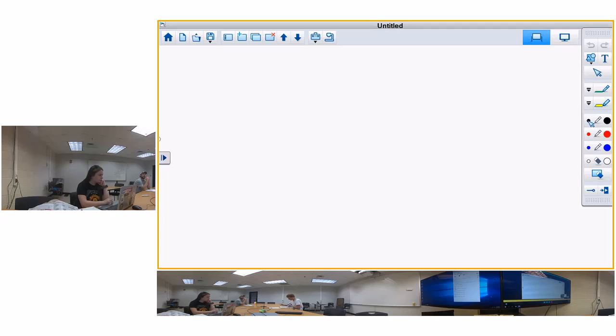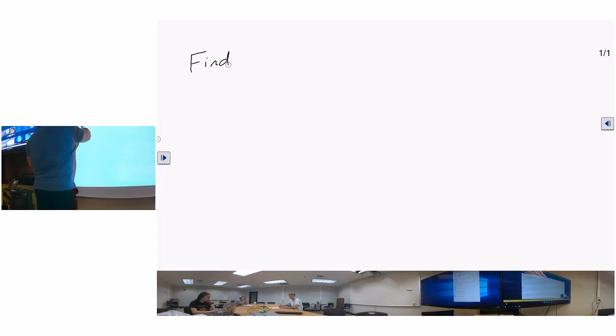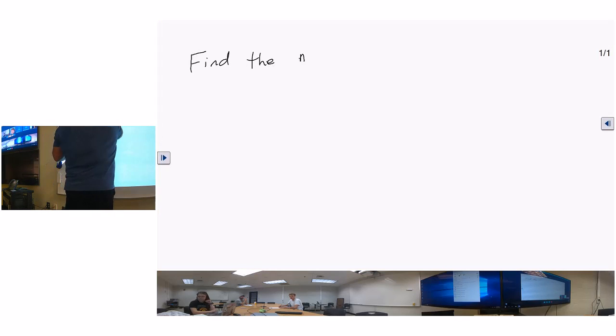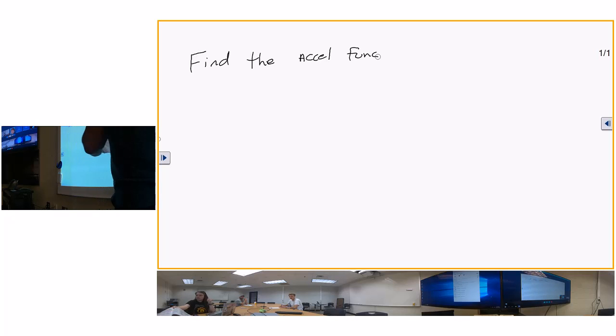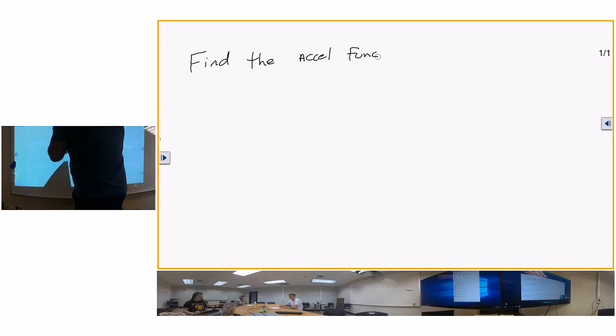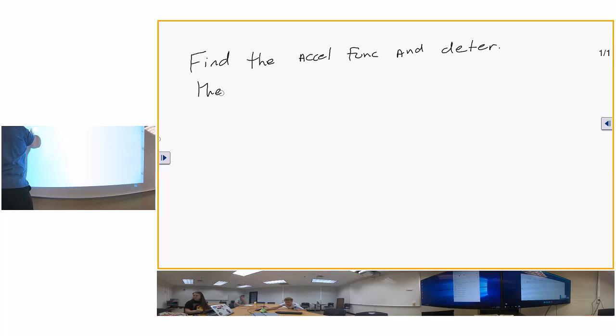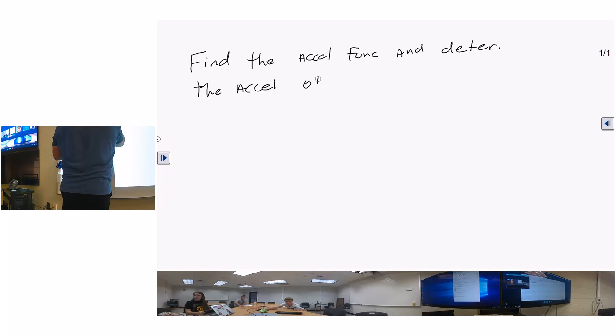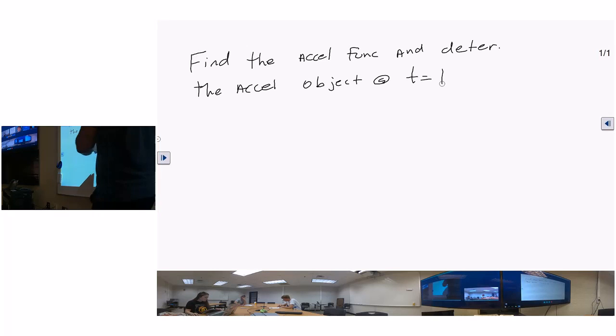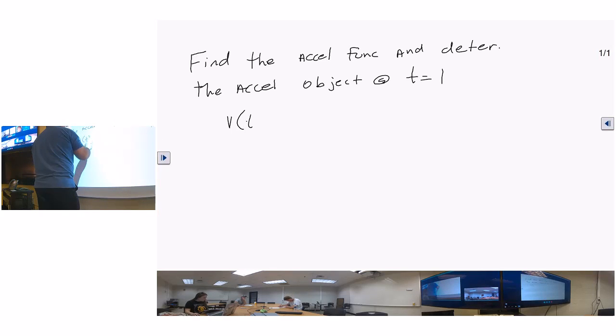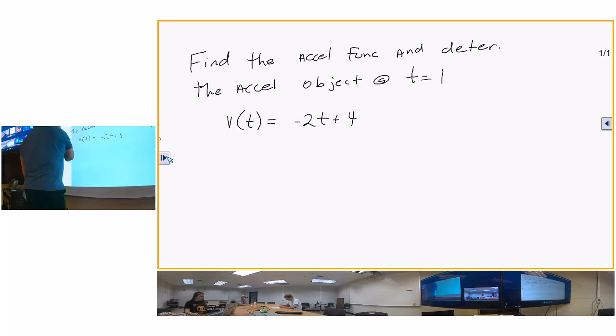Of course, I don't have the picture with me, so we're just going to have to take it. Find the acceleration function - you probably look in your book, there's probably a question like this one, because I used examples out of an old book. Determine the acceleration of the object at t equals one, and they give you v(t) equals negative 2t plus 4.